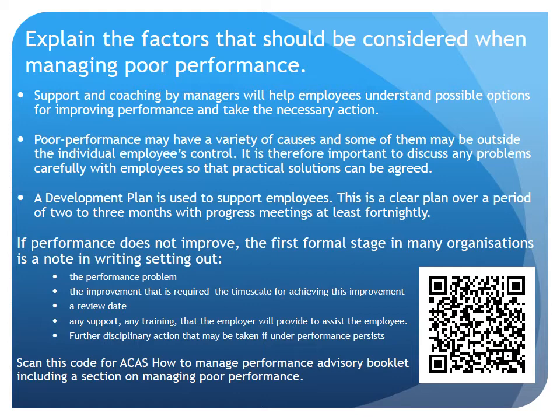If performance doesn't improve, the first formal stage in many organisations is a note in writing setting out the performance problem, the improvement that's required, and the timescale for achieving the improvement. A date will be set for a review, along with any support or training that the employer will provide to assist the employee. It will also detail further disciplinary action that may be taken if the underperformance persists.